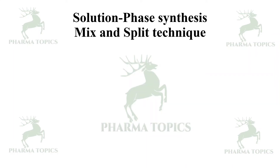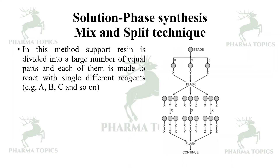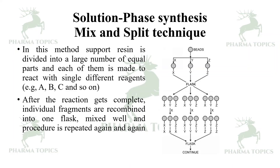Solution phase synthesis — the mix and split technique: the support resin is divided into a large number of equal parts and each is made to react with a single different reagent — first reagent A reacts, then B, then C, and so on. After the reaction is complete, individual fragments are recombined into one flask, mixed well, and the procedure is repeated. This is the multi-mix and split technique.